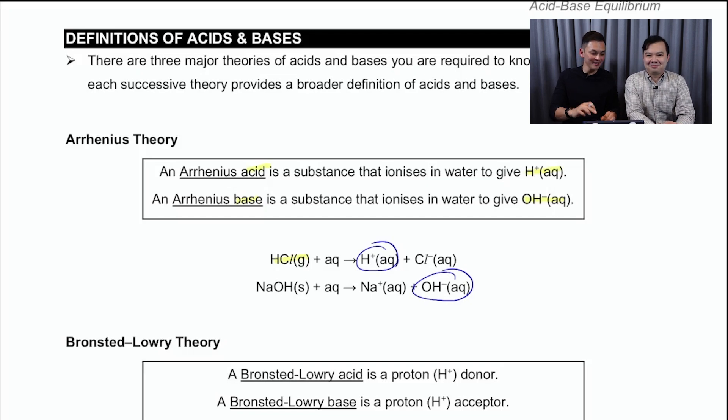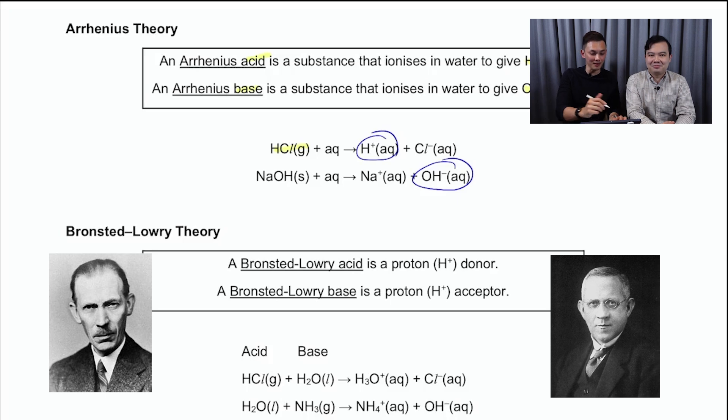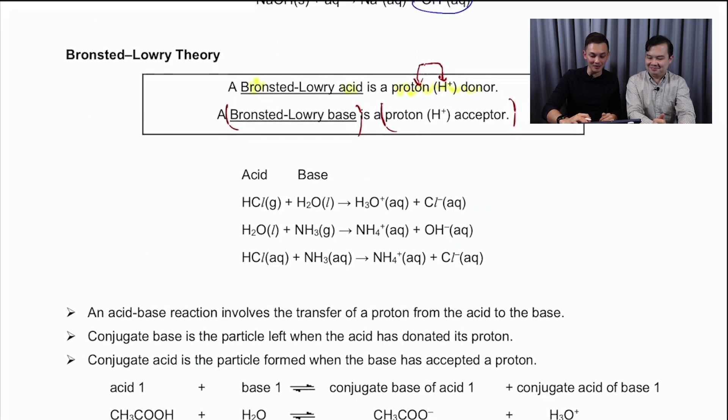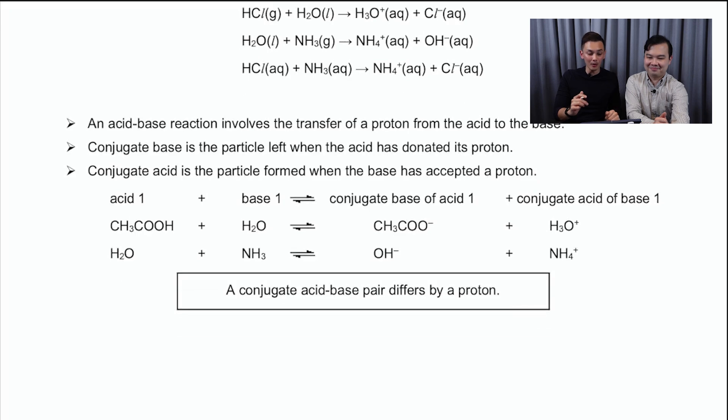So when we do the Arrhenius definition, we are more interested in H+ or OH-, depending on whether you're acid or base. Now, at A level, what we are more interested in is this definition called the Brønsted theory. Now, what's the Brønsted theory? It says over there, if I'm a Brønsted acid, then generally I'm going to be a proton donor. Now, you notice that a proton is the same as a H+. So these two terms, they are interchangeable. And then a Brønsted base is defined as a proton or H+ acceptor.